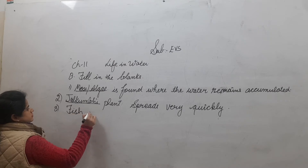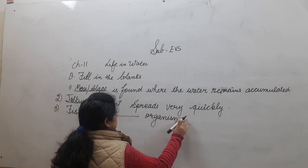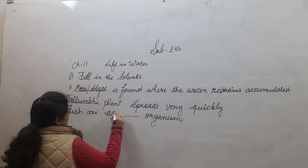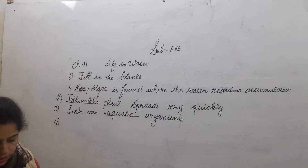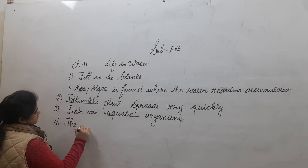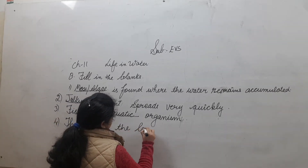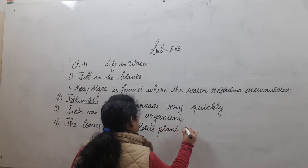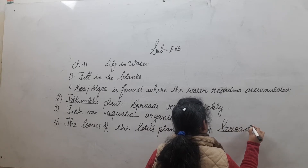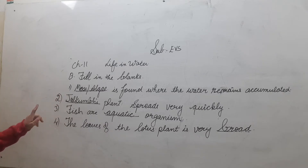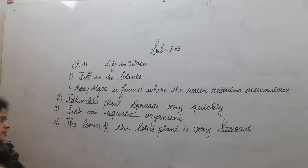Next: fish are dash organism. Yes, fish are aquatic — they live in water. Fourth is: the leaves of the lotus plant are very broad. So fill in the blanks: moss or algae is found where water remains accumulated. Jalcumbi plants spread very quickly.